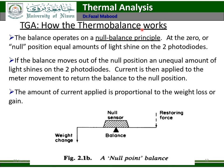How do thermobalances work in TGA? The balances operate on a null balance principle. At the zero or null position, equal amounts of light shine on the photodiodes. If the balance moves out of the null position, an unequal amount of light shines on the two photodiodes. Current is then applied to the meter movement to return the balance to the null position. The amount of current produced is proportional to the weight loss or gain. Here is the restraining force, the null sensor, and the balance.